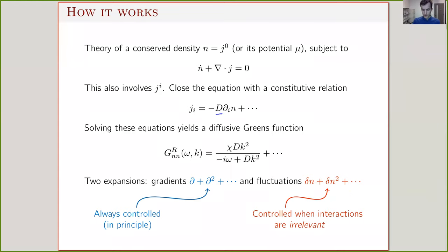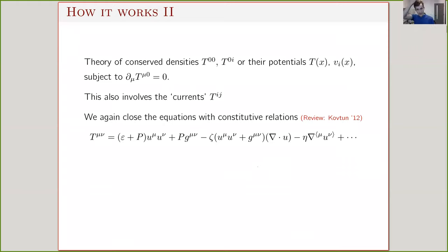Let me show another example: sound modes, which occur in theories with conserved momentum — conserved energy and momentum. In a QFT with just stress tensor conservation, the slow modes are the conserved densities: momentum density and energy density. People sometimes work instead with the associated potentials, temperature and velocity. There's one degree of freedom for every conserved density. Again, the conservation law involves the spatial parts of the stress tensor, which are not slow, so we need to write them in terms of the slow densities.